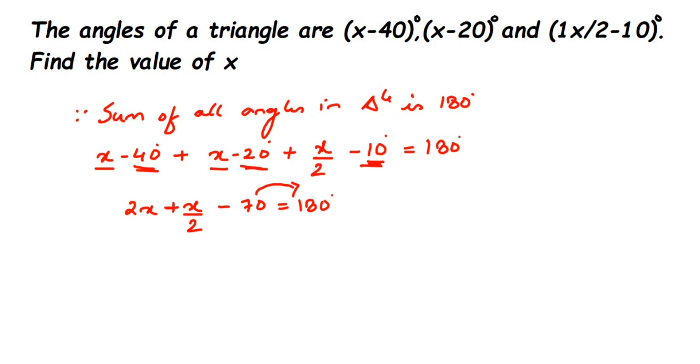Looking at the variable side, we have 2x plus x/2. We're going to take LCM. I'll write 2x as 2x/1. You cannot add a whole number and a fraction directly. The LCM of 1 and 2 is 2.